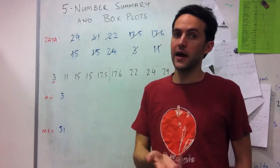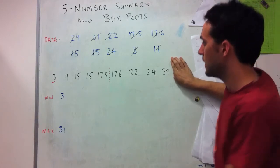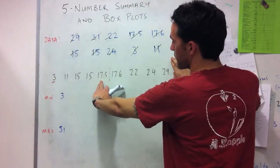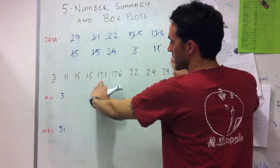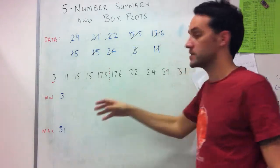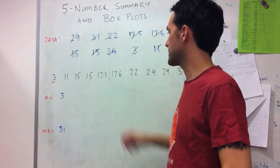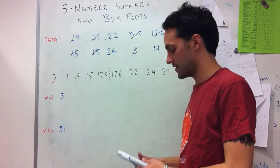If I only had 9 evaluations, so if I didn't have this 31, for instance, then this 17.5 would be the actual median, because then I'd have 4 data to the left of it, 4 data to the right of it. But since I've got 10 data, my median becomes the average of 17.5 and 17.6.